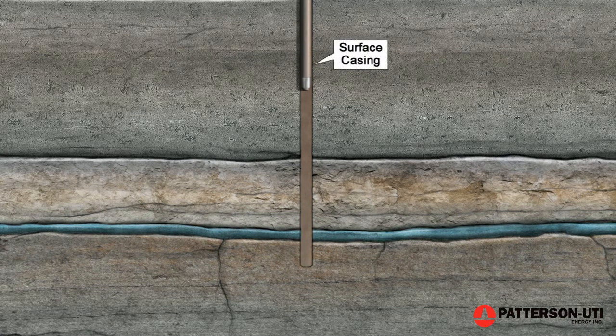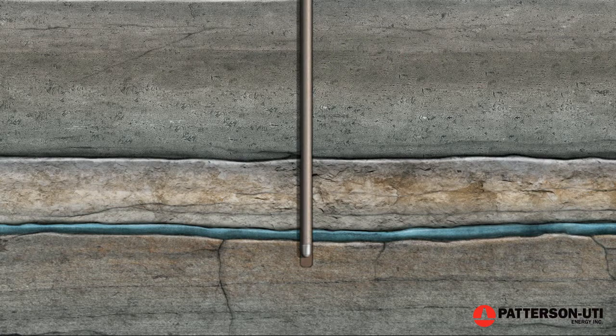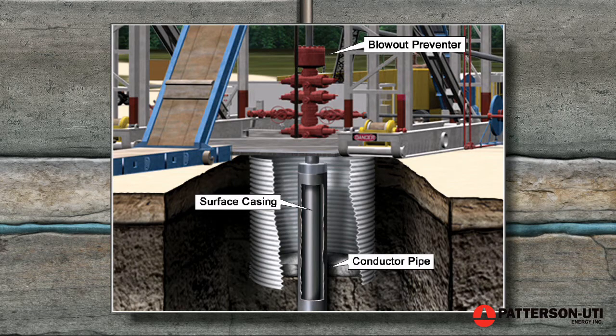Surface casing is inserted into the drilled hole to isolate the fresh water zone and also serves as a foundation for the blowout preventer, a safety device that connects the rig to the wellbore.